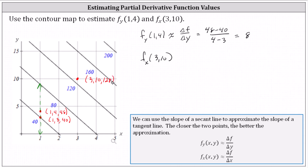We select a second point, now in the x direction, fairly close — let's say this point here. For this point we estimate x to be between 2 and 3, approximately 2.7; y is 10; and the function value is exactly 120, giving the ordered triple (2.7, 10, 120). We'll estimate the partial of f with respect to x by determining the change in function value divided by the change in x.